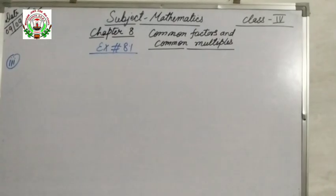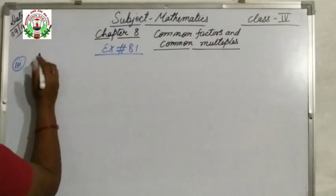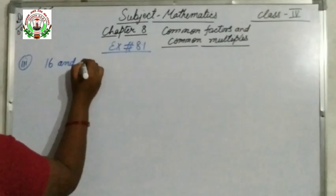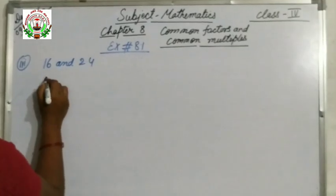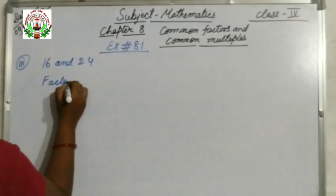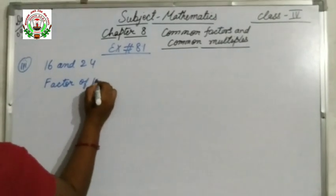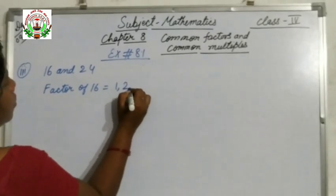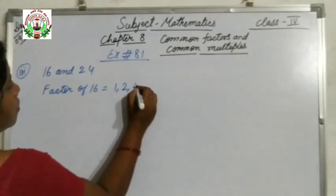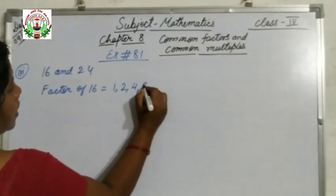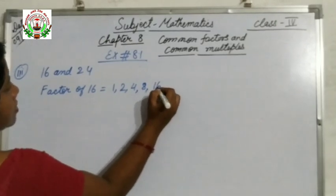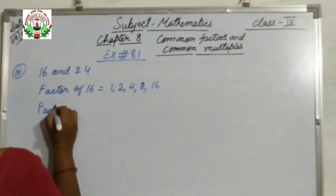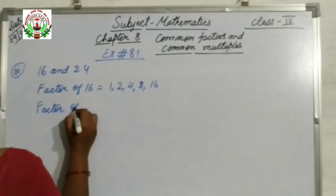Now the next question is question number 3: 16 and 24. First we will write the factors of 16: 1, 2 times 8 is 16, 4 times 4 is 16, 8 times 2 is 16, and 16 times 1 is 16.